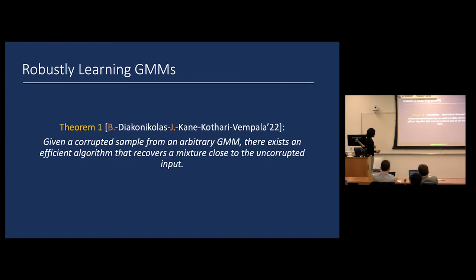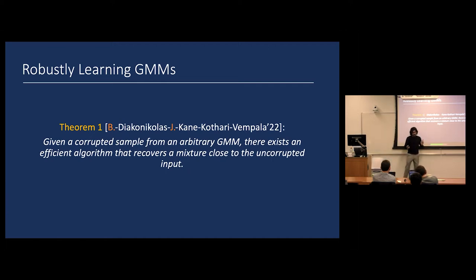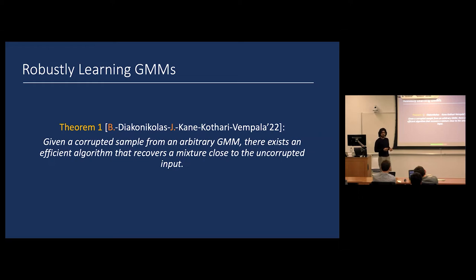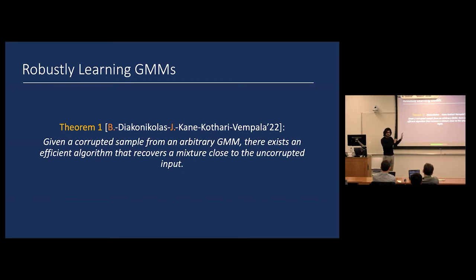Our main result says: given a corrupted sample from an arbitrary Gaussian mixture — with no assumptions on the means, covariances, or mixing weights — there is an efficient algorithm that recovers a mixture close to the uncorrupted input. I claim this resolves the open question presented a few slides ago.